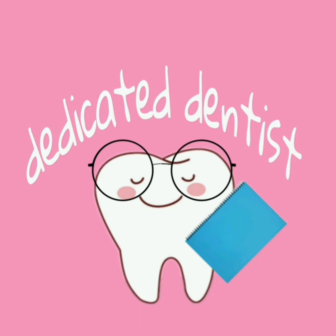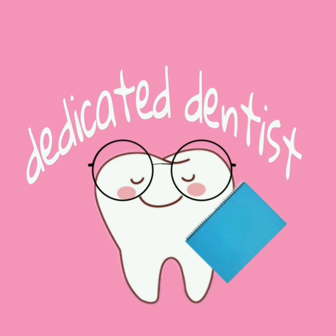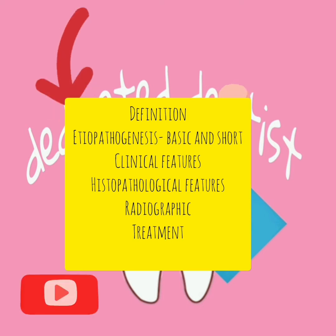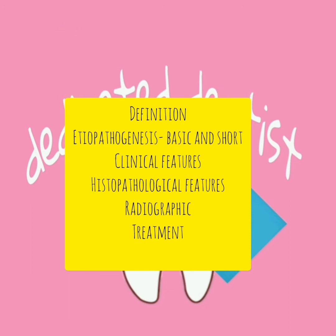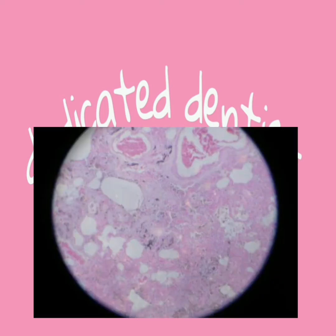In oral pathology in third year, you are expected to write answers under headings like classification, definitions, epidemiology, incidences, etiopathogenesis, clinical features, histopathology, radiographic features, prognosis, differential diagnosis, and treatment. I suggest you be very thorough with definitions, classifications, clinical features, histopathology, and radiographic features, as most questions — including viva questions — revolve around these.